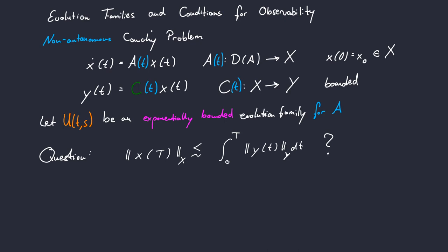Coming back to our original problem of the final state observability. Assume now that for our non-autonomous Cauchy problem, there exists an evolution family U(t,s) exponentially bounded and related to our operator family A(t). We can now formulate this estimate using the notion of the evolution family. And we can now in the next part turn to our observation equation because we will also need additional assumptions on our family of filters C(t) in order to guarantee the existence of a final state observability estimate.